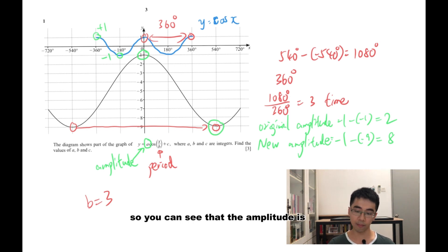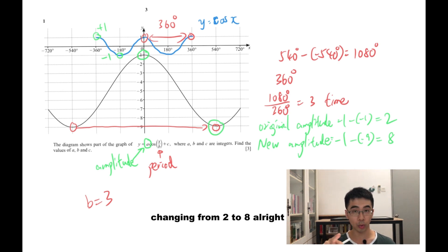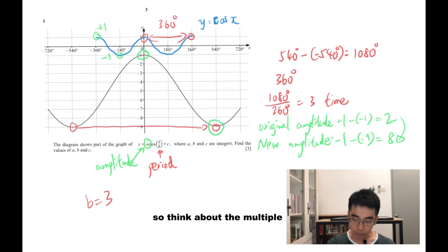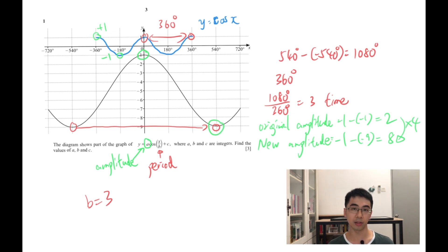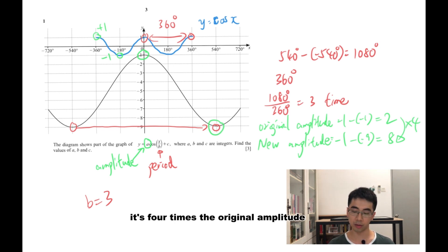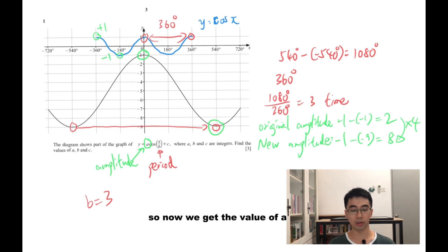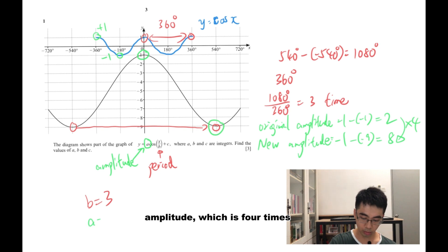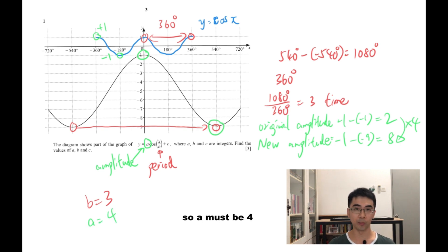We can see that the amplitude changed from 2 to 8, which is 4 times the original amplitude. So the value of a must be 4.